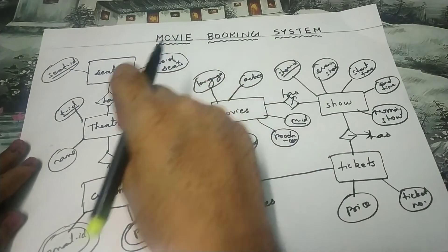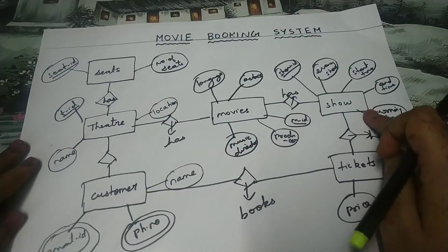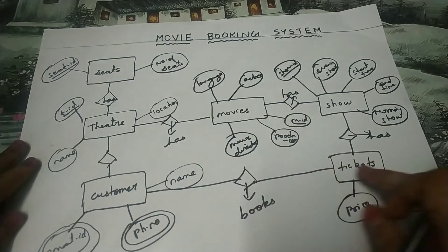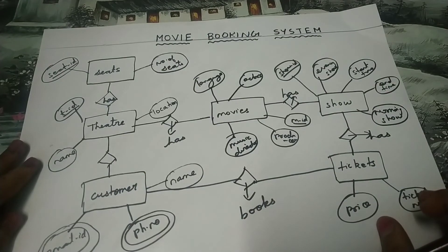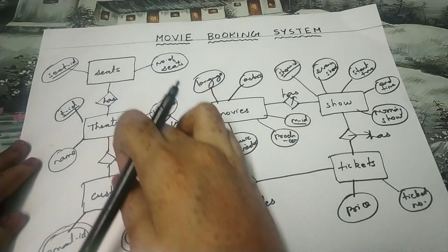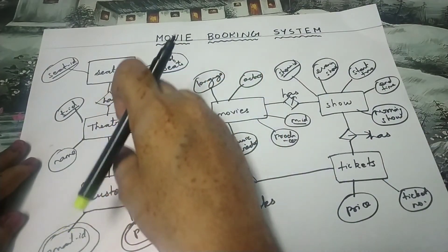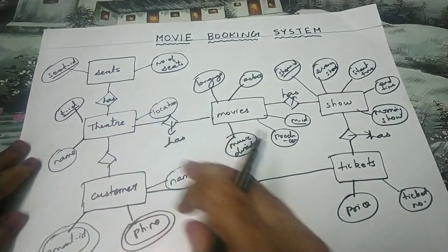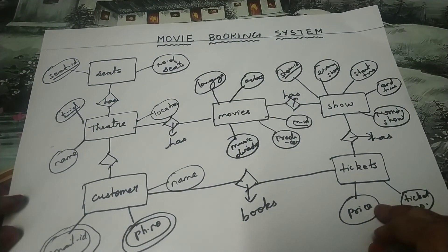Theatre has seats, and theatre also has movies, and movies has different shows, and show has various tickets, and the customer will book the tickets. These are all the entities and their corresponding attributes, connected through lines with relationship diamond boxes. This is how we draw an ER diagram for a movie booking system.